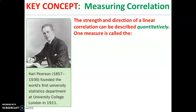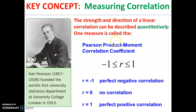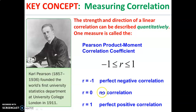As a reminder, when we looked at correlation, we measured it using something called the Pearson Product Moment Correlation Coefficient, otherwise known as the r-value. An r-value can be between negative 1 and 1, where 0 represents no correlation, 1 represents a perfect positive correlation, and negative 1 represents a perfect negative correlation.